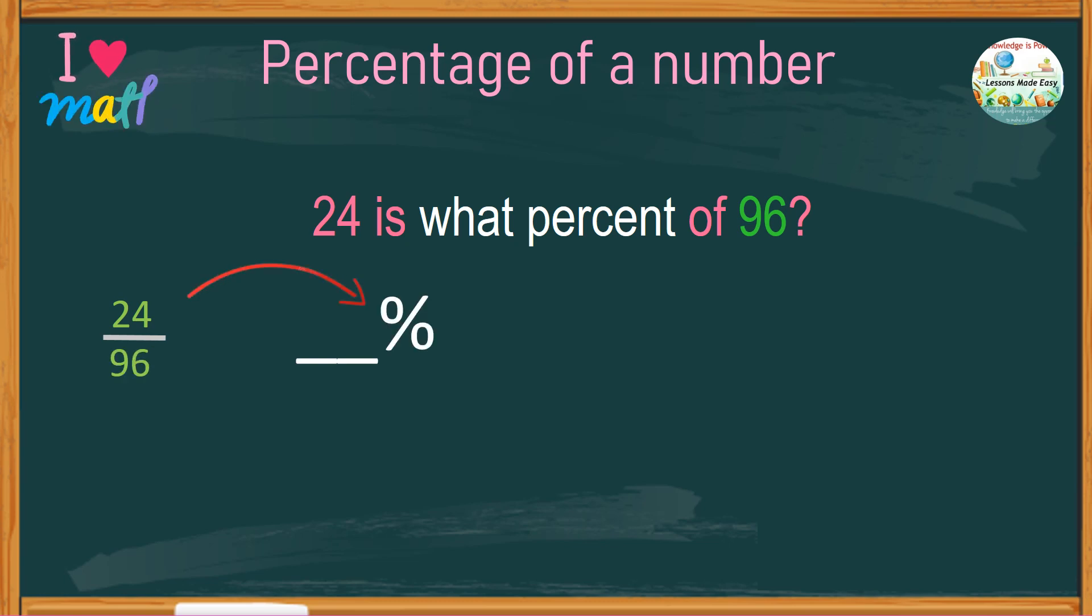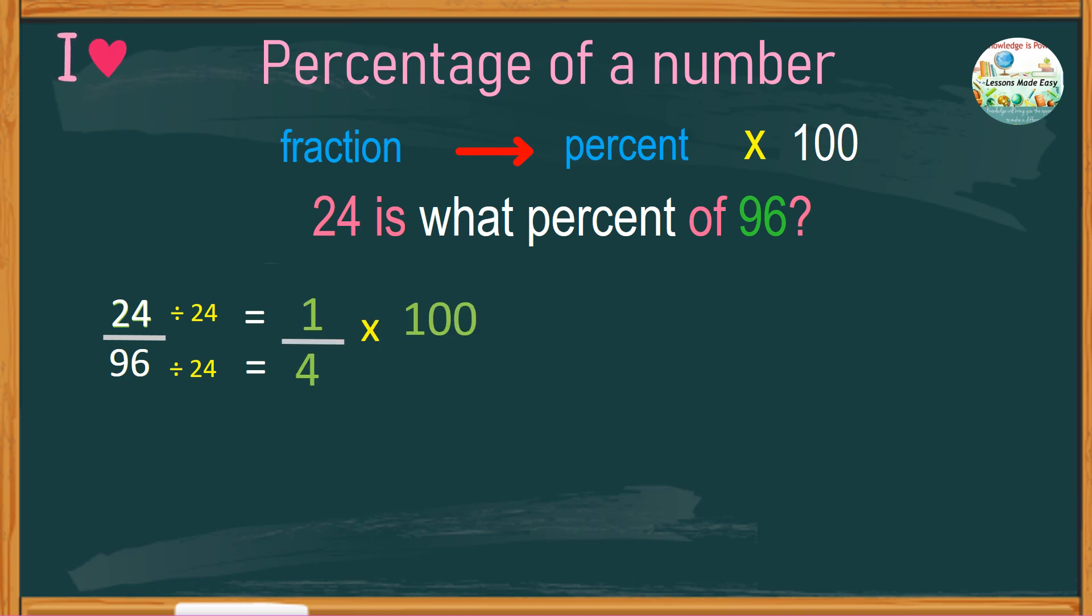Again, this is just changing fraction into percent by multiplying the fraction by 100. The given fraction 24 over 96 can still be reduced into its simplest form, so we get a much smaller number. By dividing the fraction by 24, we get an equivalent fraction of 1 over 4 times 100. Since 100 is a whole number, expressing it into a fraction, it comes with a denominator 1.